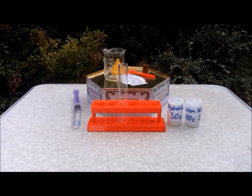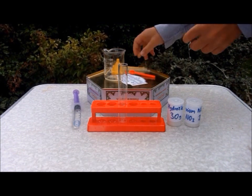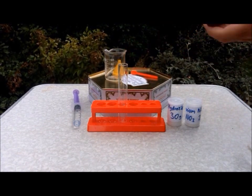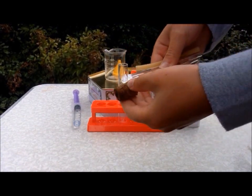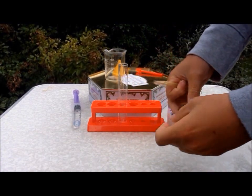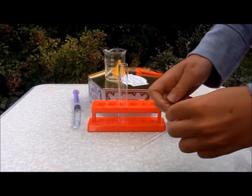So first you need to set up your tubing for collecting the ammonia. First you need to get your cork and place glass tubing in it, like that, and then on that piece of glass tubing you need to attach the rubber tubing.